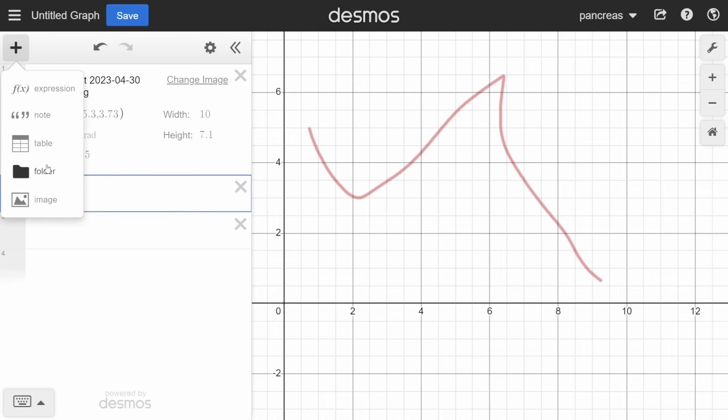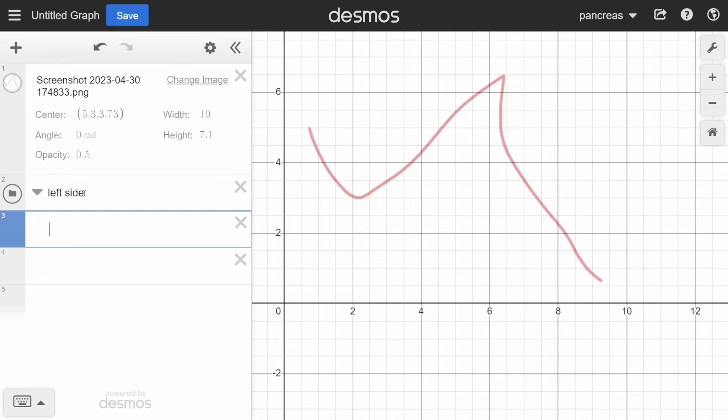For larger Desmos projects, it is better to have different files for functions for different parts of your image. I'm going to separate this function into a left and right side. From here, now all you need to do is decide on what section of the outline would best fit the shape of a function.